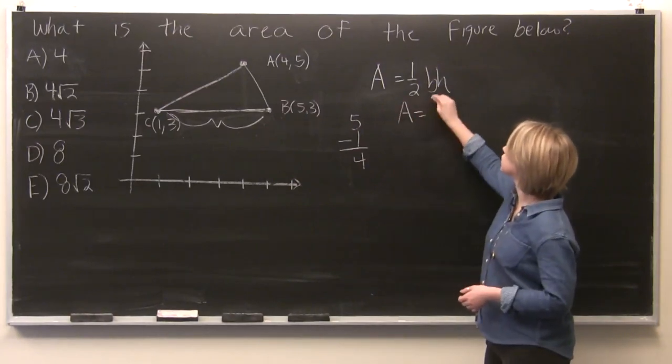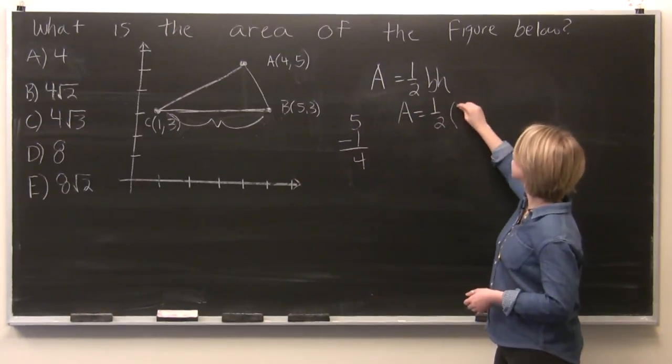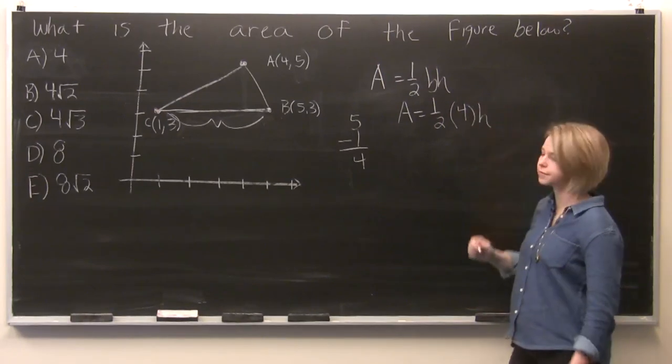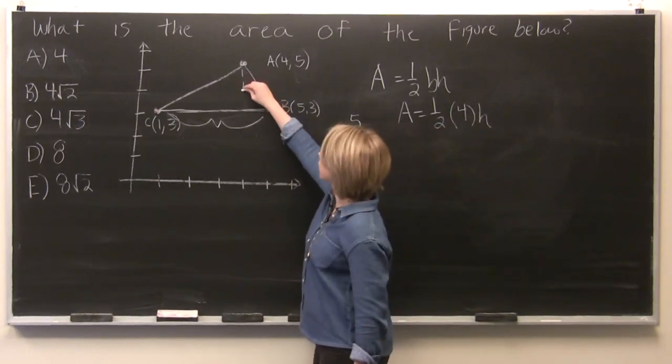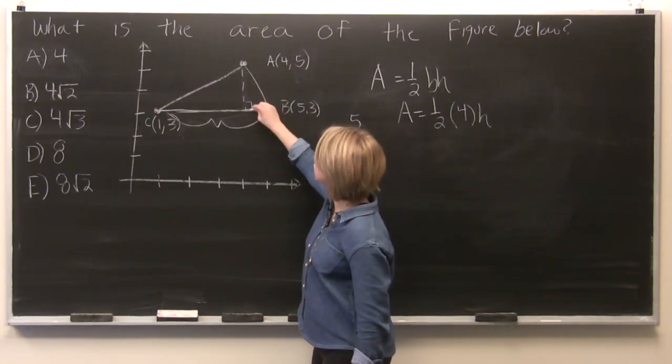So our area is equal to 1 half, 4 for our base, times the height. And now to find the height, it's really as simple as dropping a perpendicular line to our base.